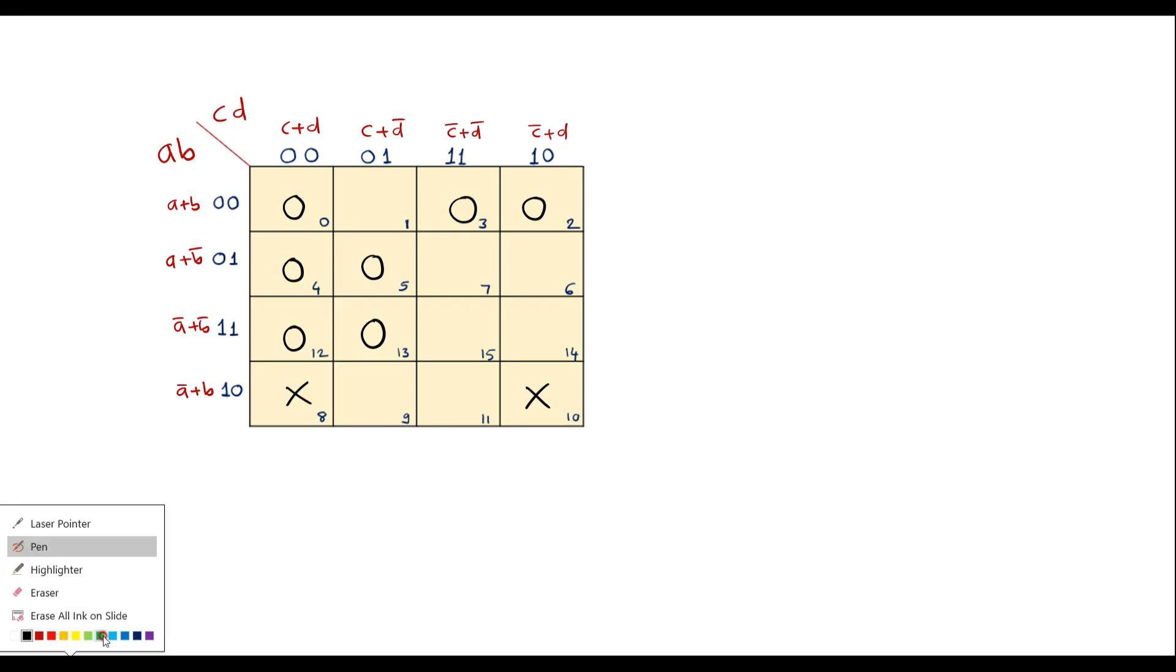So here we can observe that 4, 5, 12, 13 cell numbers I can make one quad here.